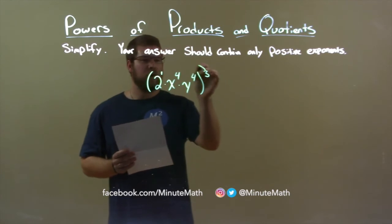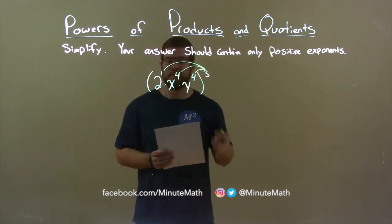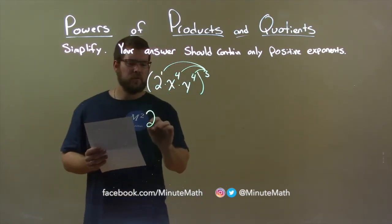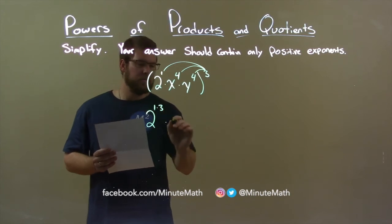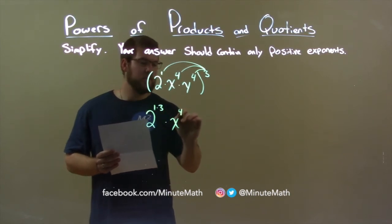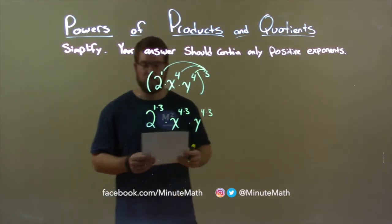we take that 3rd power and it gets distributed to all the exponents with multiplication. So, 2 to the 1st power becomes 2 to the 1 power times 3, times x now to the 4 times 3 power, times y to the 4 times 3 power as well.